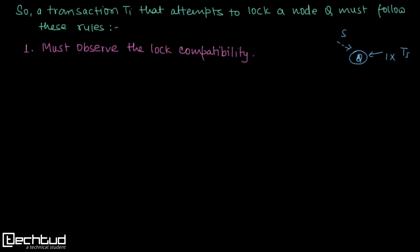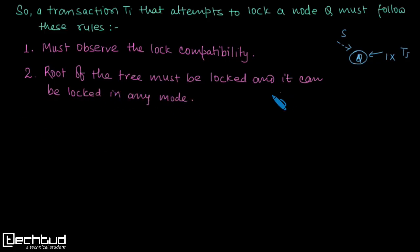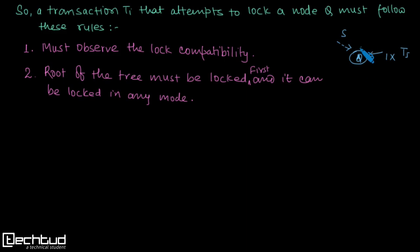The second rule is that the root of the tree must be locked first, and it can be locked in any mode. When a transaction ti attempts to lock a node q that is part of a tree with some parent a, we first need to lock the parent. This parent can be locked in any intention lock mode.